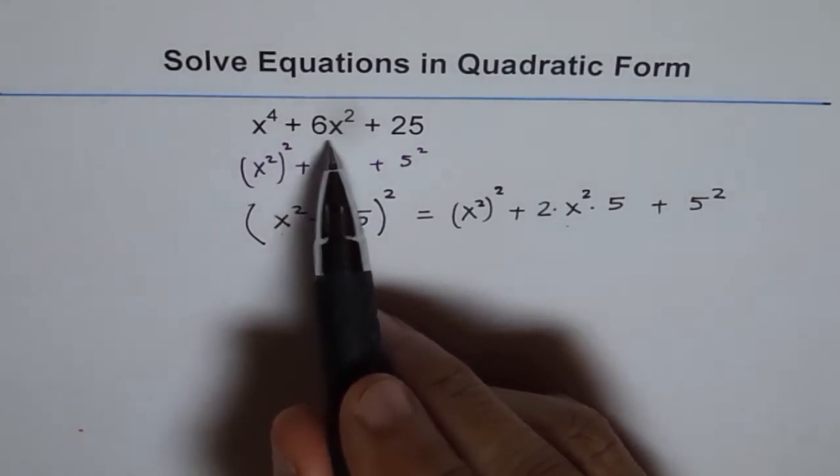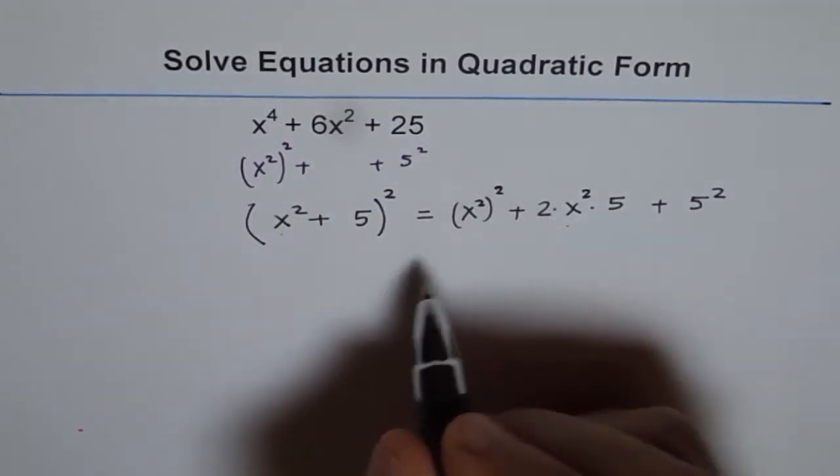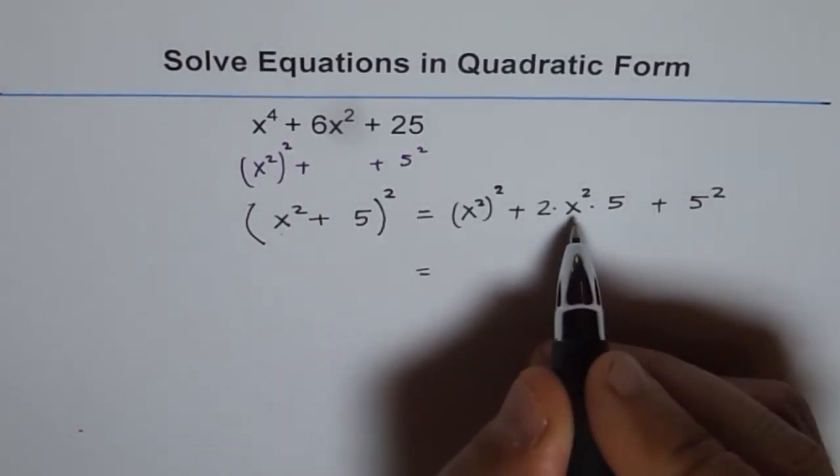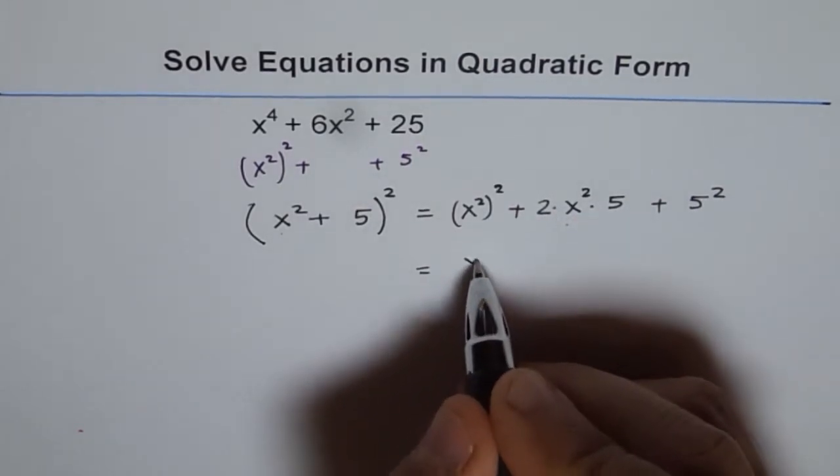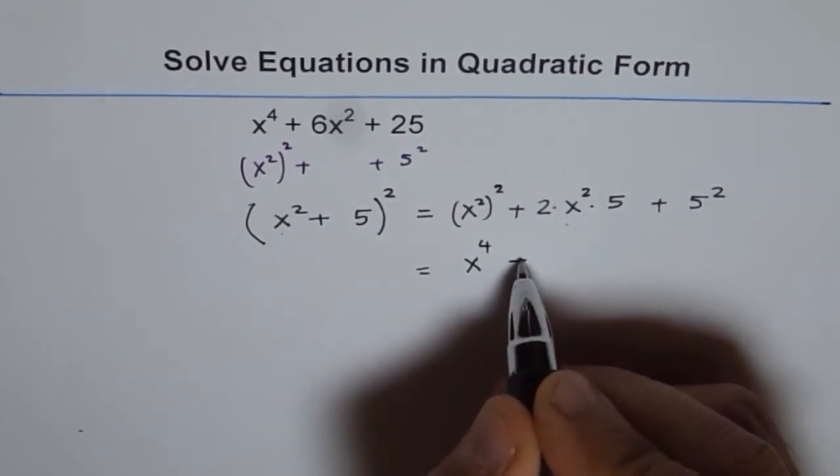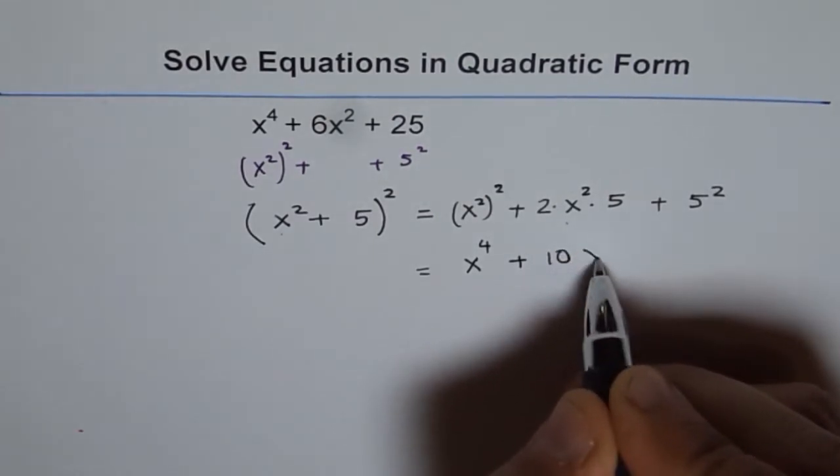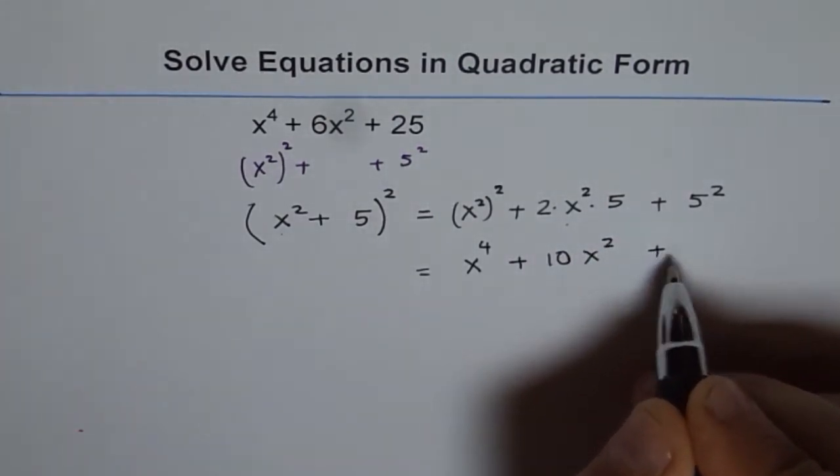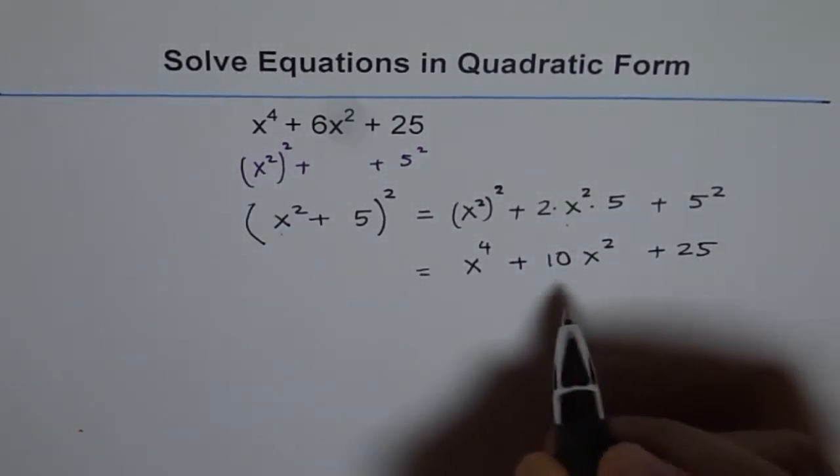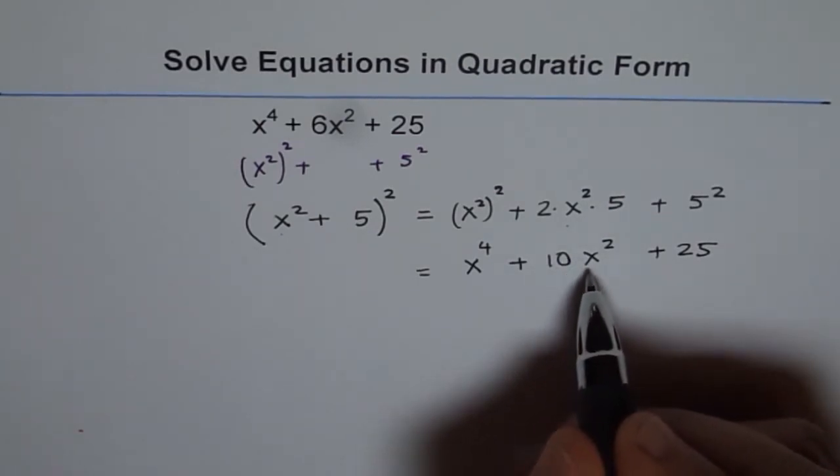There we have 6x^2, and what do we expect? We expect 10x^2, 2 times 5. So let me write this now as x^4 + 10x^2 + 25. So what is missing? 4x^2 is missing.